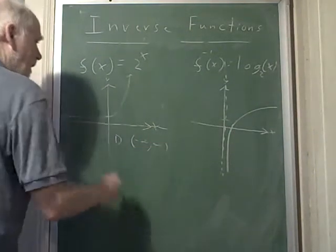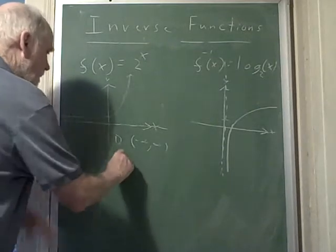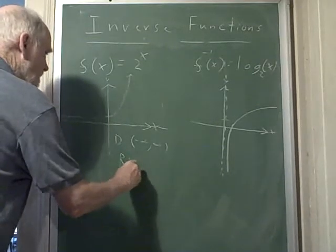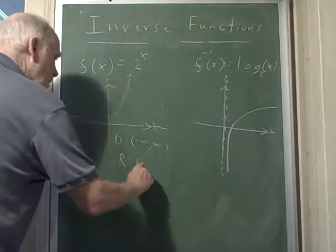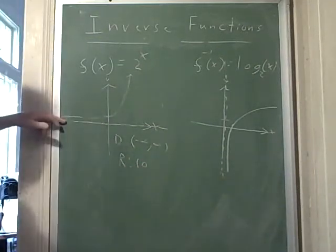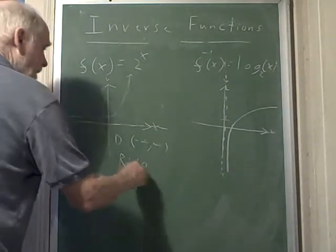And I can put anything I like in there. But my range is always going to be positive, greater than 0, because it doesn't ever touch the x-axis, never goes below to negative y values.